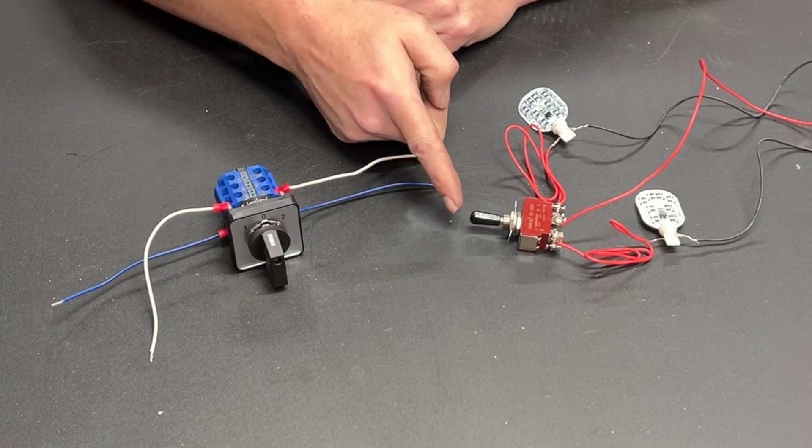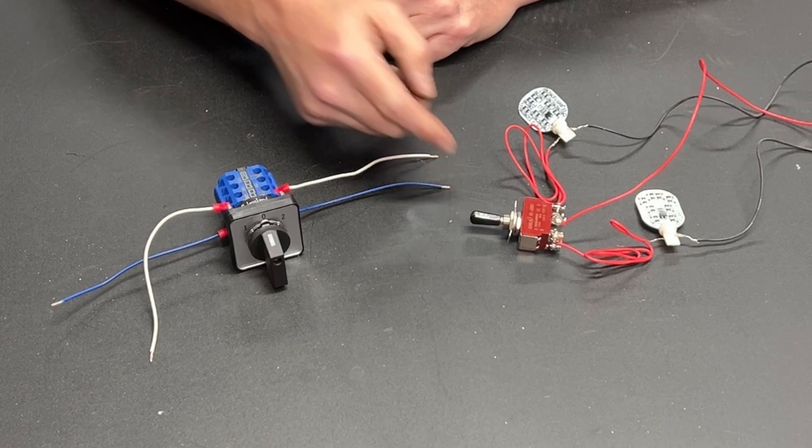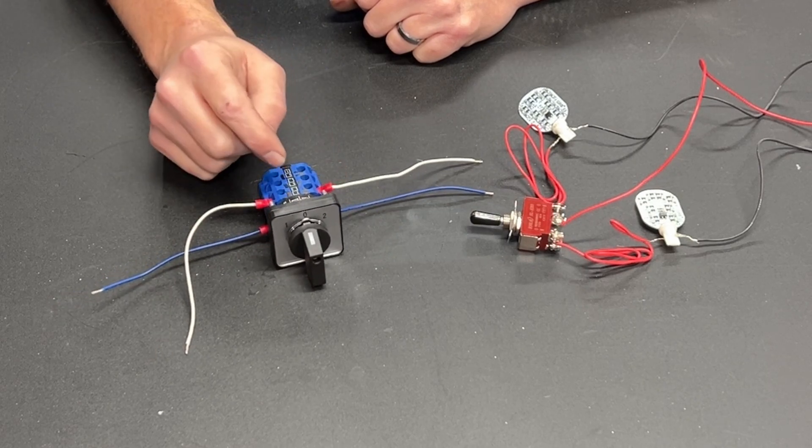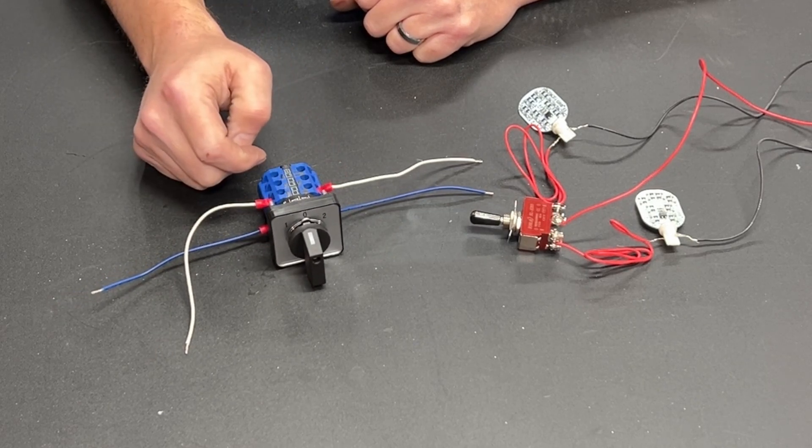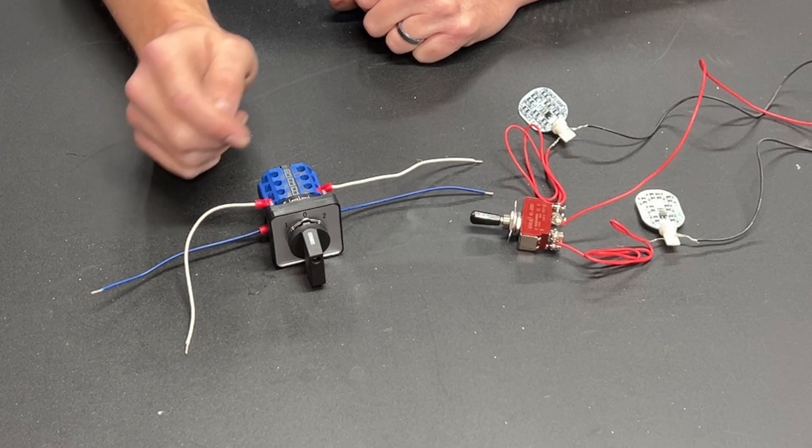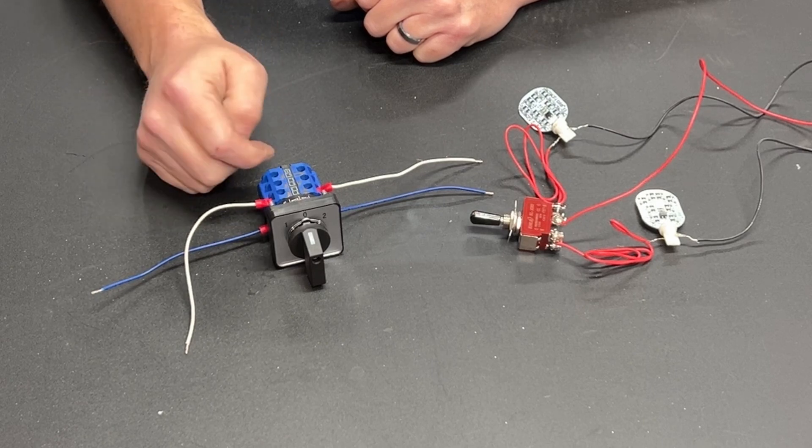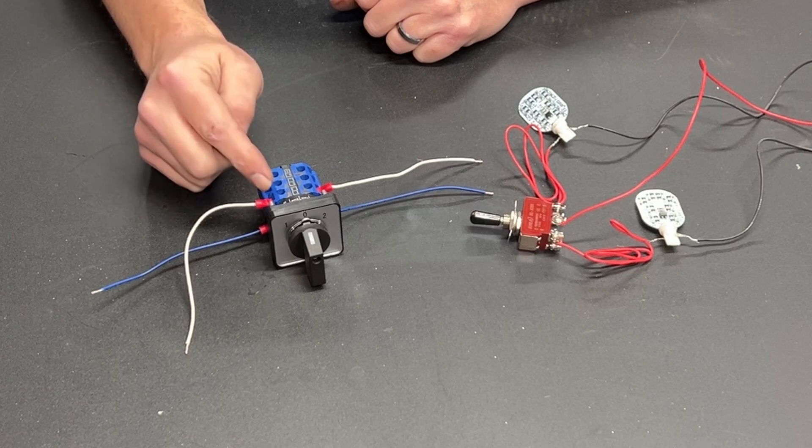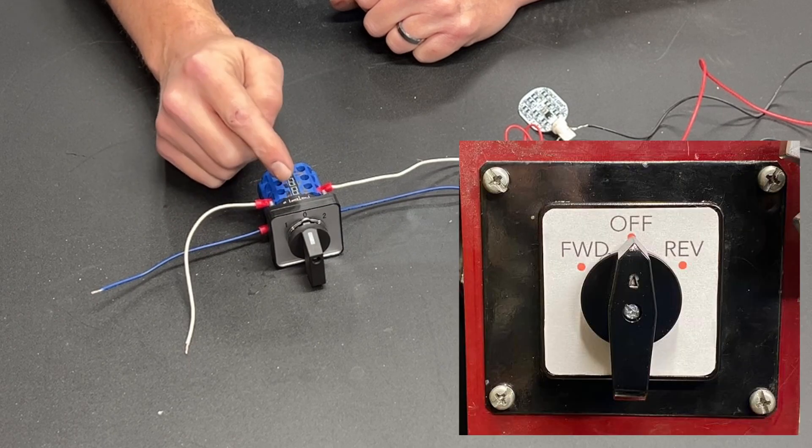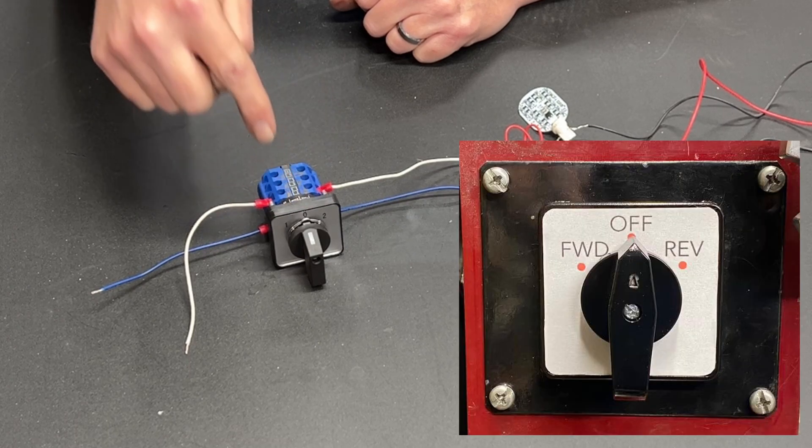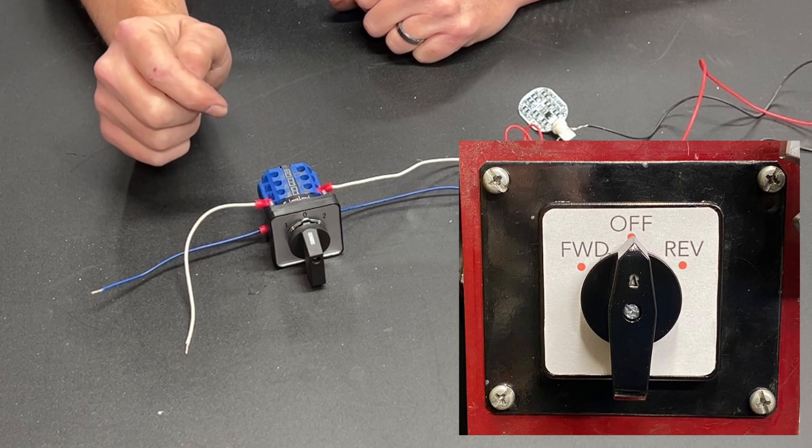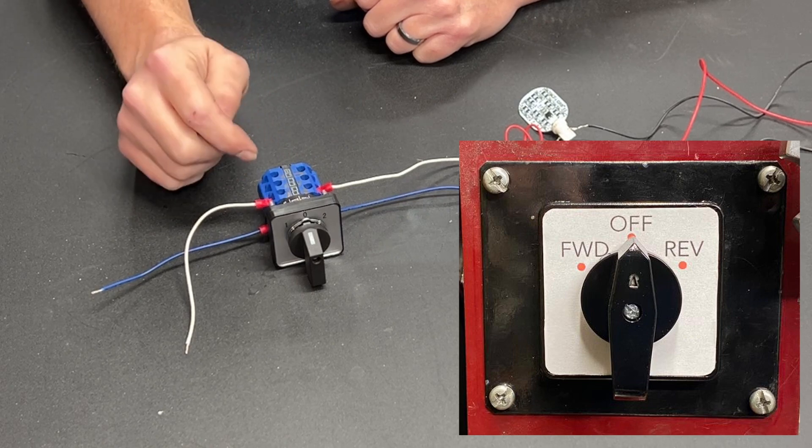But what if you don't want a toggle switch? What if you want a rotary switch? Can I find a rotary switch that is double throw? The answer is after tons of looking I did finally find one. The switch that I'm using in my lathe as a direction switch is way bigger than this. It's way heavier duty and it is a double throw switch.